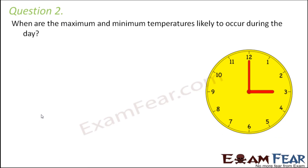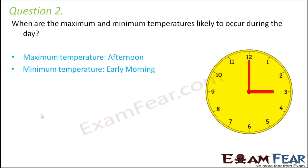Question number two: when are the maximum and minimum temperatures likely to occur during the day? Maximum temperature happens in the afternoon because, due to the rotation of the earth, different parts get exposed to the sun at different times. During the afternoon, the maximum heat reaches from the sun to the earth. Minimum temperature is observed early in the morning — that's when temperature is at its least.